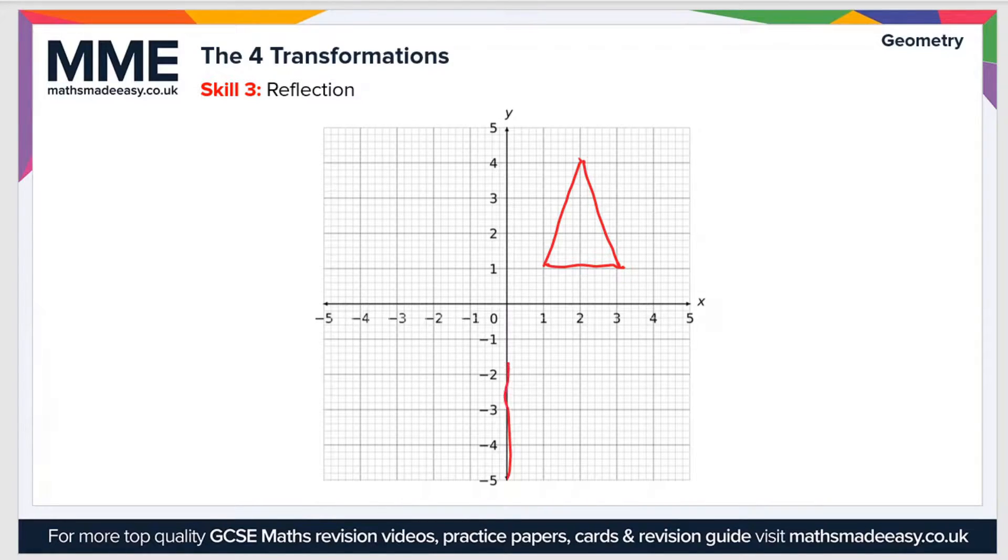...means all of the x coordinates are zero, so it's just a straight line going up through the x-axis at x equals zero and parallel to the y-axis. In this case the line is the same as the y-axis, so let's just label that x equals zero. Now if we want to reflect this shape in the line x equals zero...